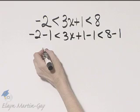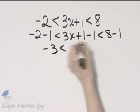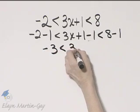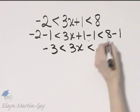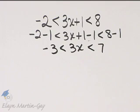The left side, I have negative 3 less than, in the middle, the 1 subtract out, and I have 3x less than 8 minus 1, which is 7.